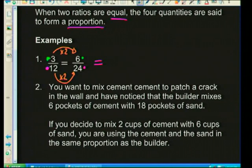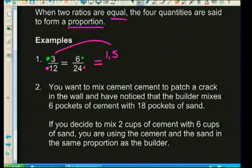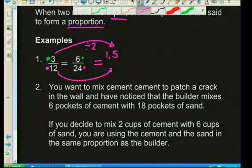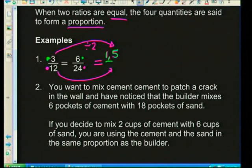We can create another equivalent ratio. Let's change our 3 to 1.5. What did we do to go from 3 to 1.5? We divided by 2. So we need to do the same to the bottom: 12 divided by 2 gives us 6. So 1.5 to 6, 3 to 12, and 6 to 24 are all equal fractions and they're in proportion to each other.